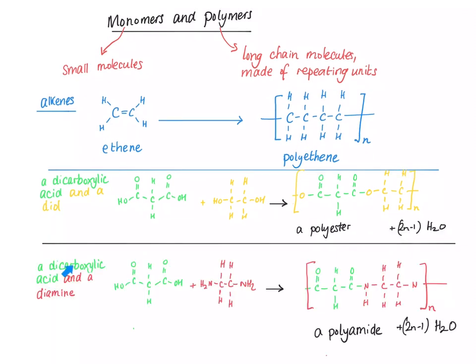If you react a dicarboxylic acid and a diamine — this molecule here is a diamine because it contains 2 amine groups — the polymer you get is called a polyamide, and you also get molecules of water made.